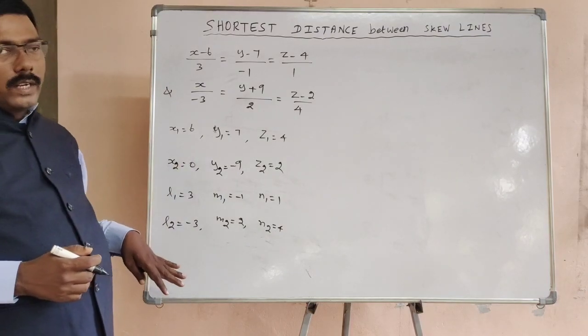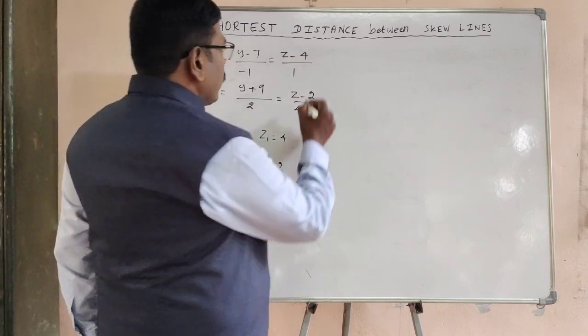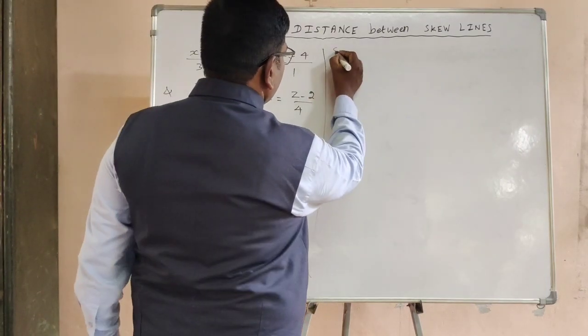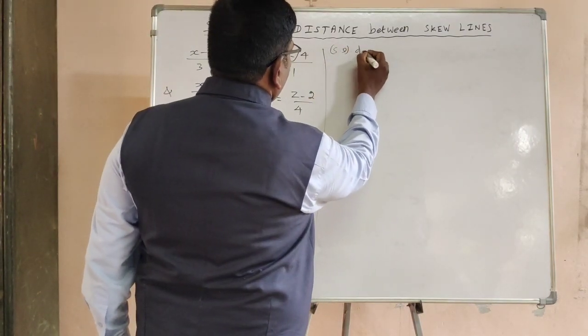You have written the coordinates. Now, the shortest distance D equals...